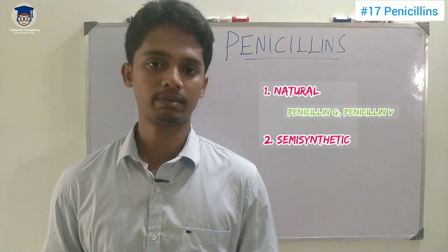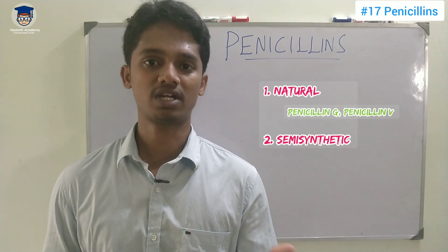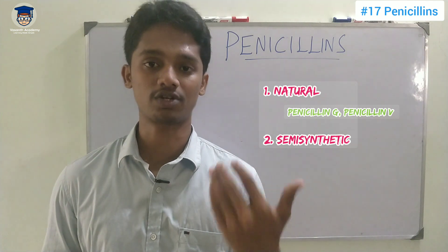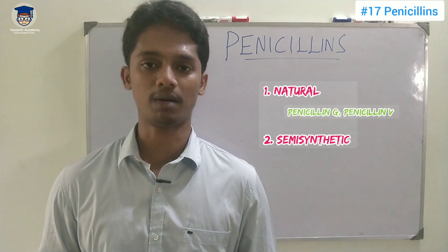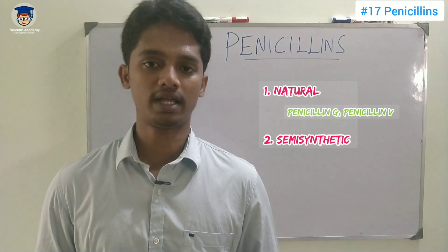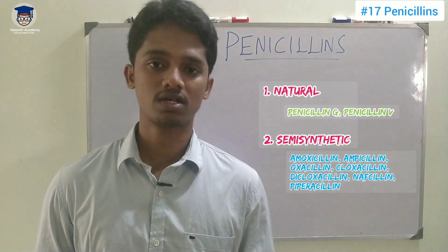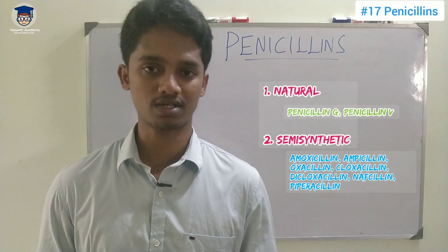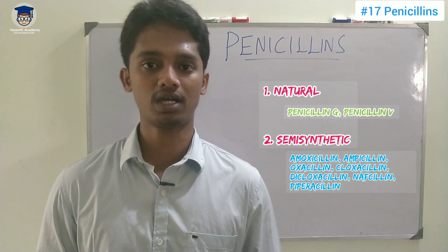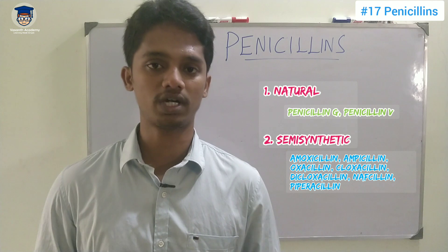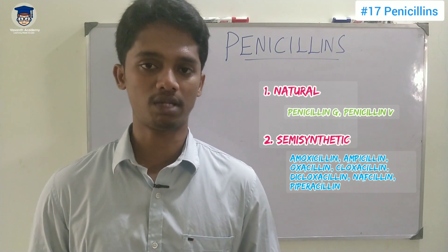Look at all these other drugs — they are semi-synthetic. In the case of semi-synthetic penicillin, the side chain structure is varied synthetically. Examples include amoxicillin, ampicillin, cloxacillin, oxacillin, dicloxacillin, and nafcillin. These are narrow-spectrum drugs. More recently, piperacillin has been developed as a broad-spectrum antibiotic. Natural penicillin is narrow-spectrum.